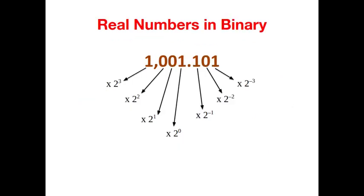We can extend the same idea to binary numbers where bits after the decimal point have weights of 2 power minus 1, 2 power minus 2 and so on. Can you tell the decimal value of this binary fractional number?